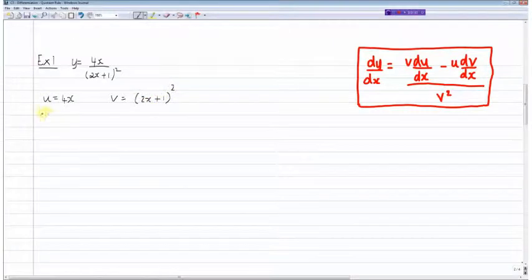We then differentiate u with respect to x as required by the rule. So du/dx is equal to 4 and then dv/dx is equal to using the chain rule it's equal to 4 times 2x plus 1.